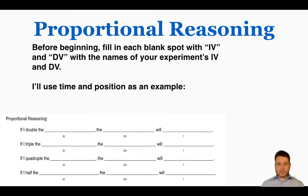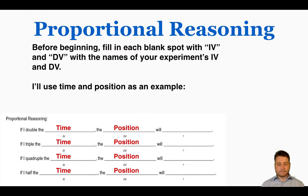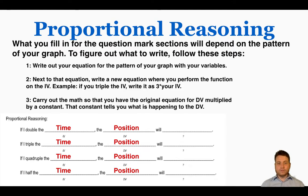I'll use a time and position experiment as an example. We're trying to understand if we do something to time, what will happen to the position as a result. What you fill in for the question mark sections will depend on the pattern of your graph. To figure out what to write, you should follow these steps.